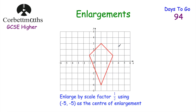Now let's look at a fractional scale factor. We're asked to enlarge a kite by scale factor one half, using centre of enlargement (-5, -5). Because the scale factor is a half, the shape will actually get smaller — all sides become half the length. Starting with the bottom of the kite: from the centre we go 6 across and 1 up, so halving those gives 3 across and a half up — placing the new point there.